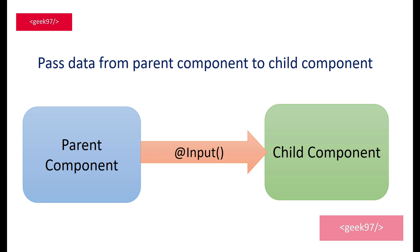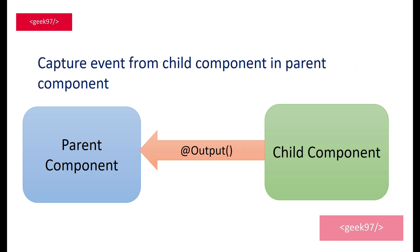Now let us see how you raise an event. There is an event in the child component and you need to capture it in the parent component — you do that using the output decorator. To put it simply, assume you have a button on a child component and the user clicks on it, raising a click event. You want to call a function on click of that button from the parent component — you use the output decorator for that.